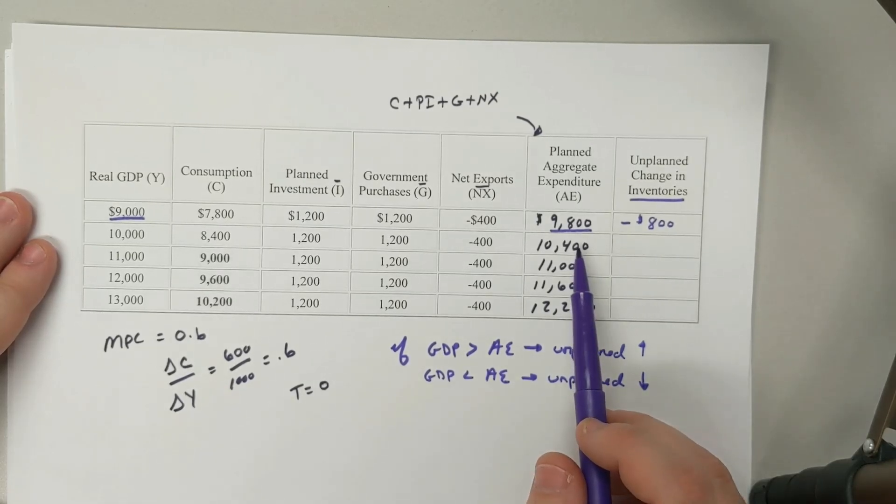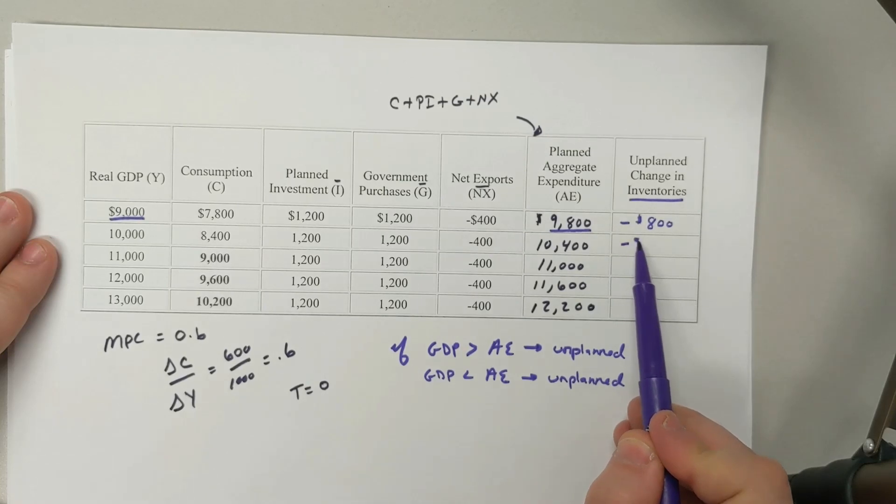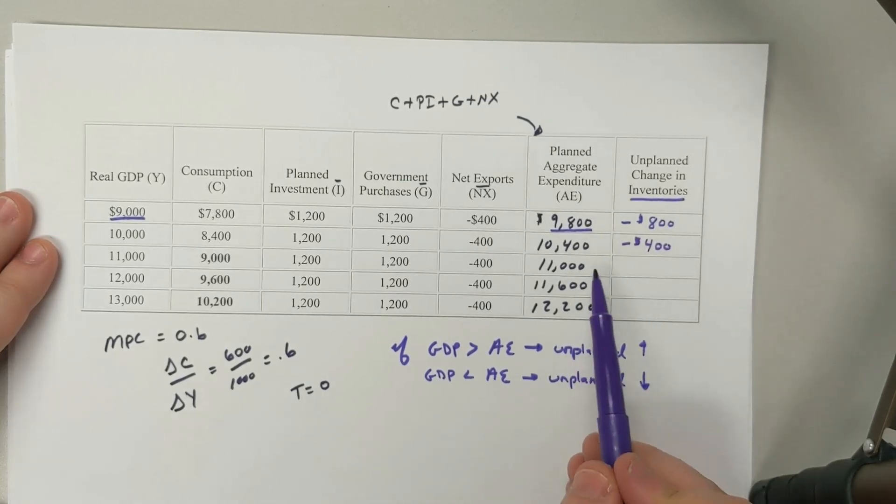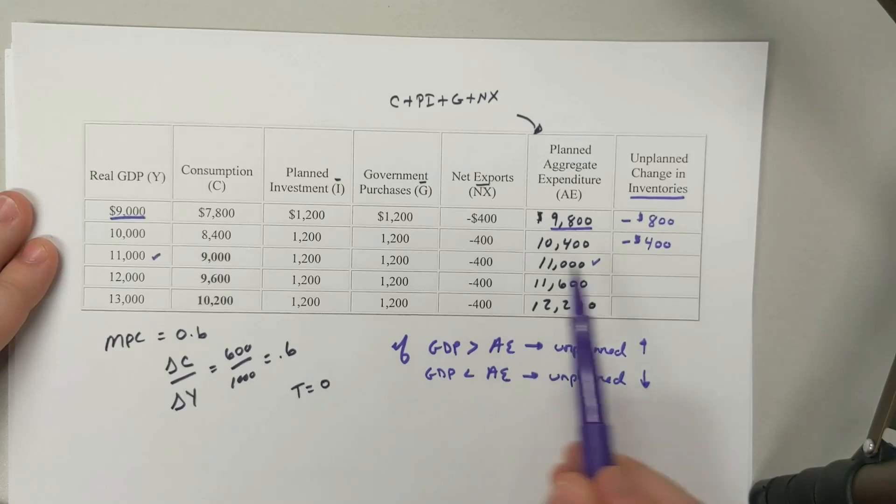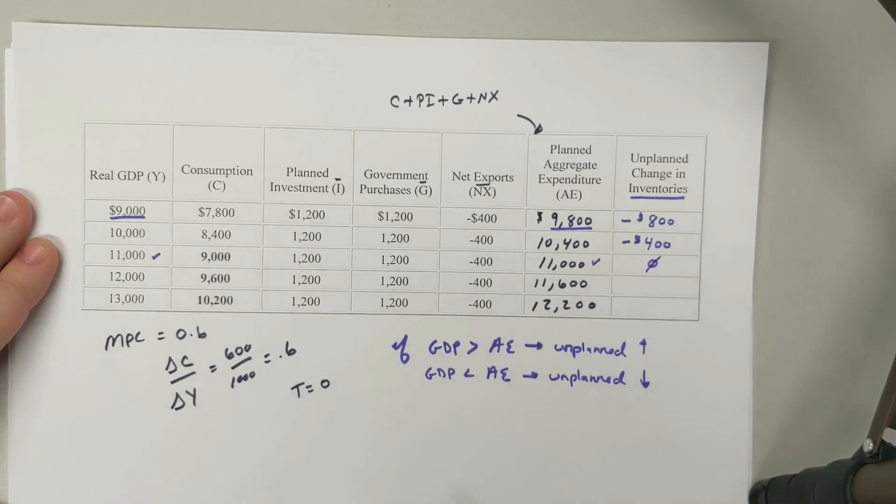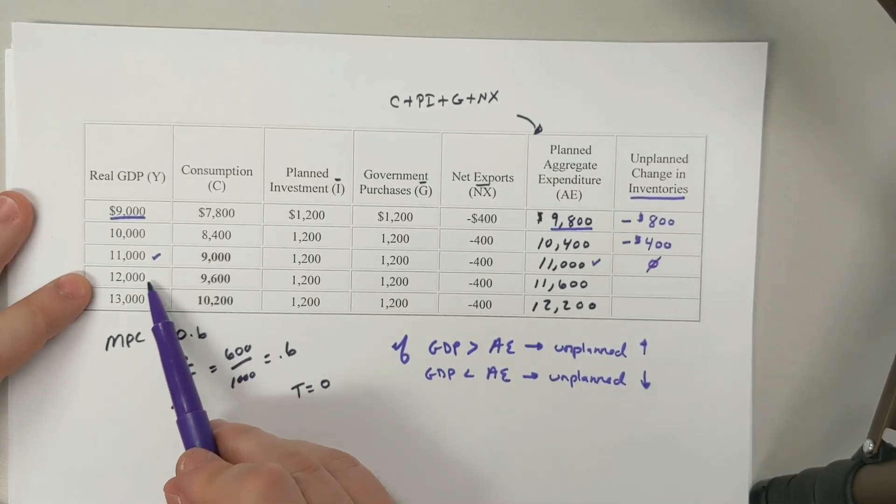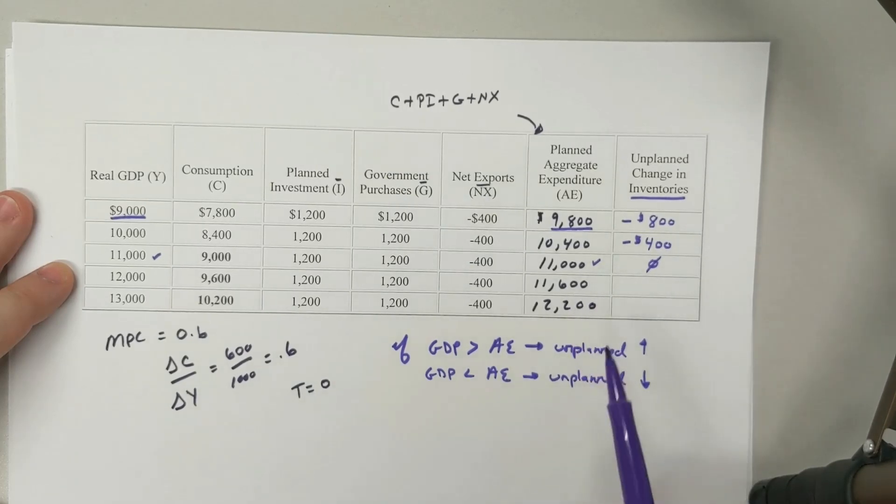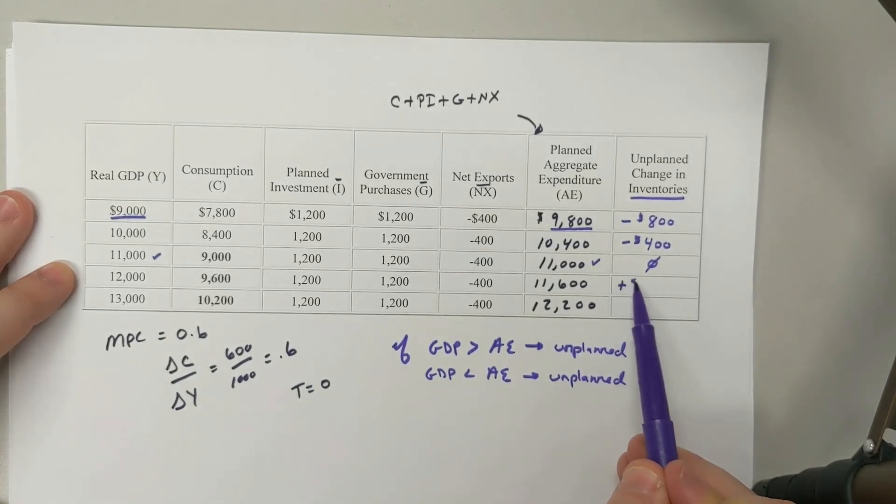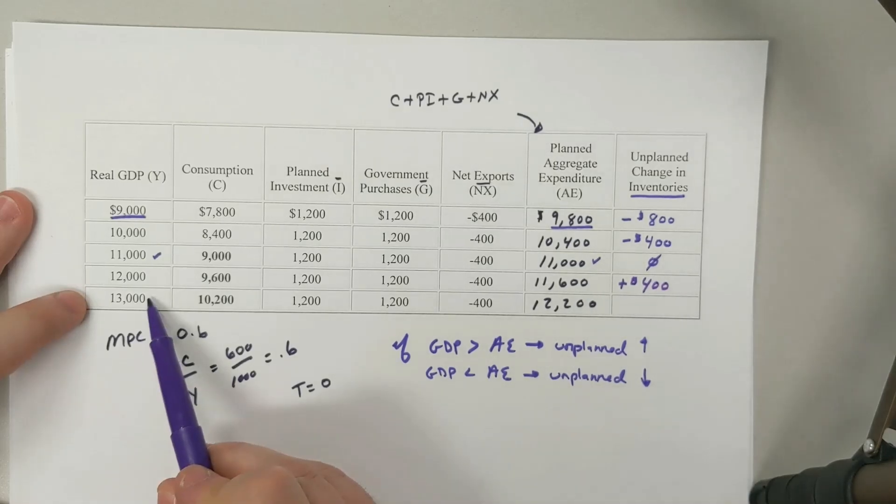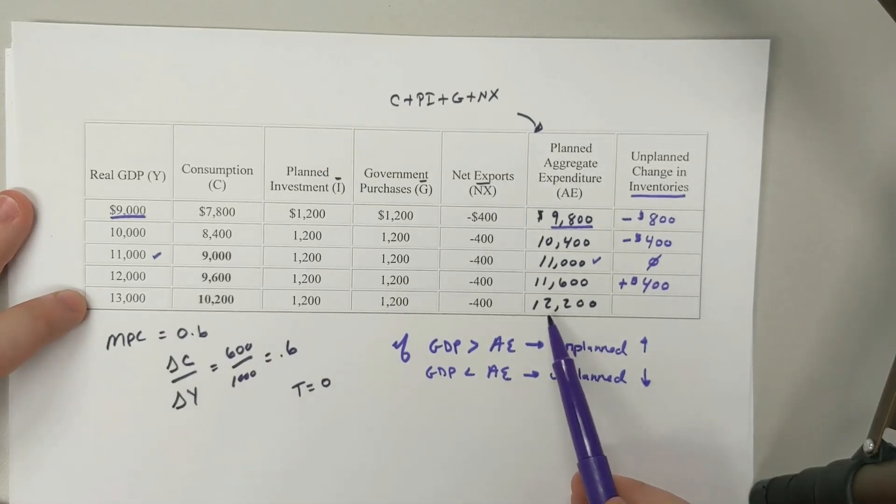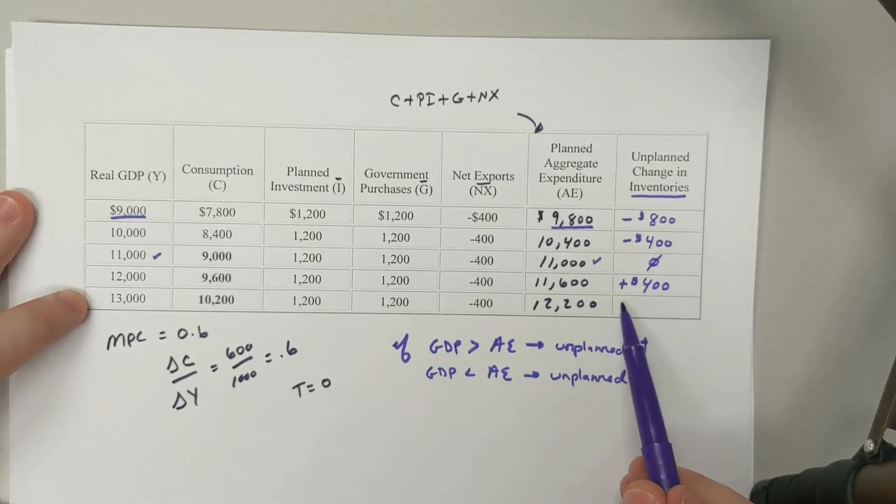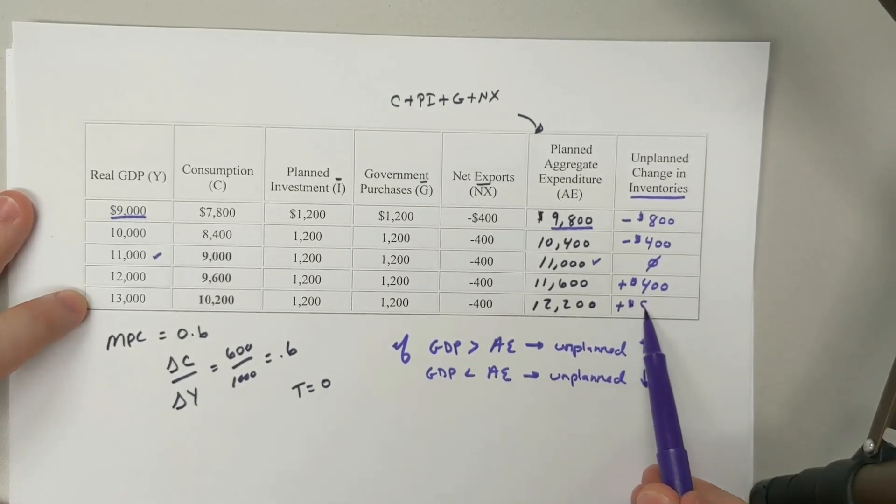We do that the rest of the way down here. Here is 400. Here we actually see they're exactly the same, so there's no unplanned change. Here there was more production than there was spending, so we added to inventories. Same thing here, $13,000 is produced, $12,200 was spent. So again, we added to inventories.